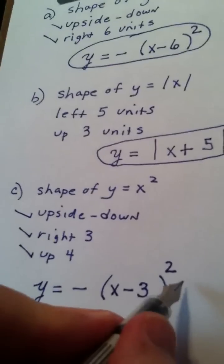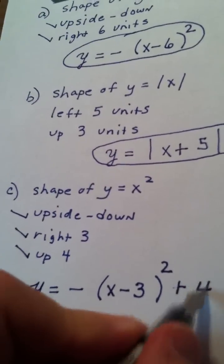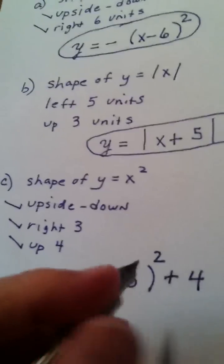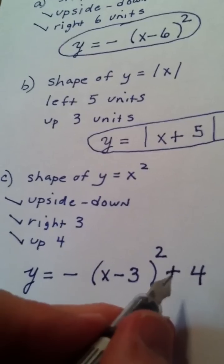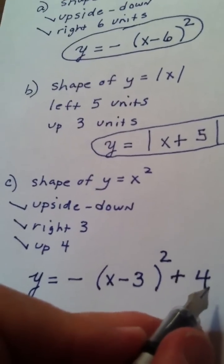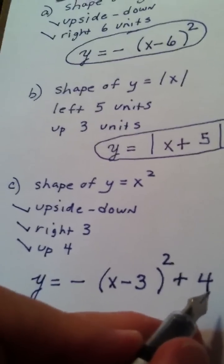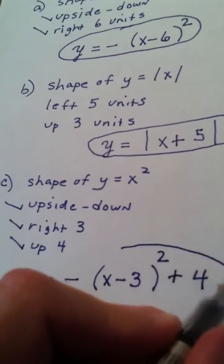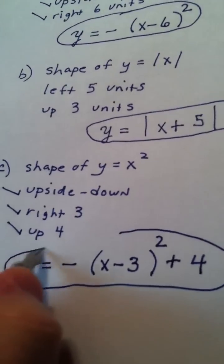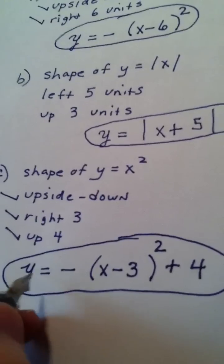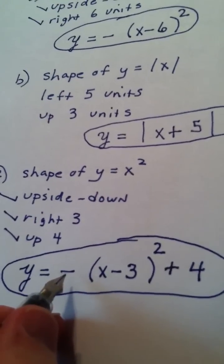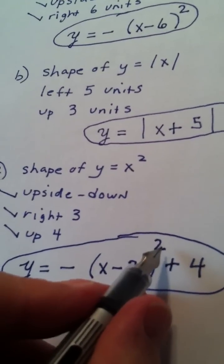And up four is my y value, and y value does exactly what it says it's going to do. So if it says up four, at the end you do a plus four. If it said down four, at the end you would do a minus four. So let's talk through why this is the answer. y equals, of course, opposite is upside down, squared means parabola.